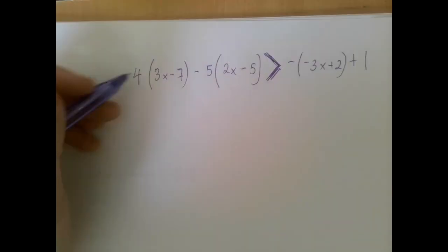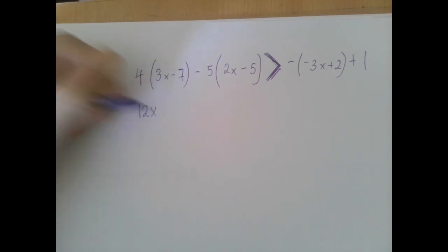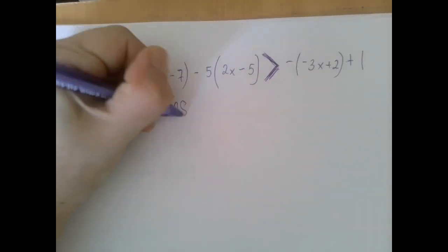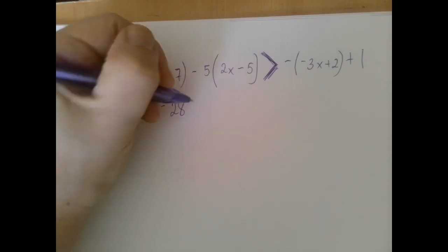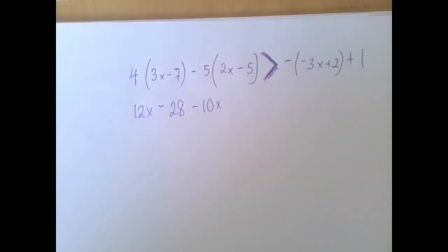Let's apply the distributive law. 4 times 3x is 12x. 4 times negative 7 is negative 28. Minus 5 times 2x is minus 10x. And negative 5 times negative 5 is plus 25.